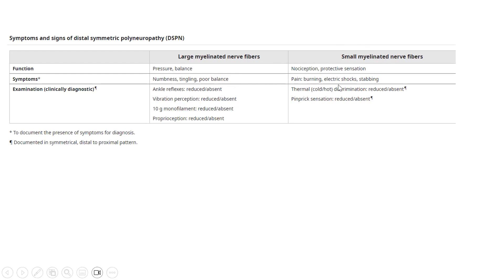Large myelinated fiber involvement causes numbness, tingling, and poor balance, while small fiber involvement causes burning, electric shock-like, and stabbing pain. On examination, large fiber signs include reduced or absent ankle reflexes, reduced vibration perception, reduced 10-gram monofilament response, and reduced proprioception. Small fiber signs include reduced thermal discrimination (cold or hot) and reduced pin-prick sensation. Any of these may appear as options in exam questions.